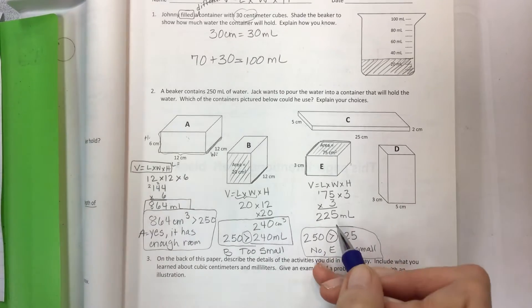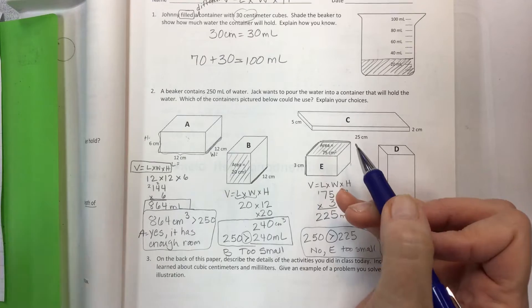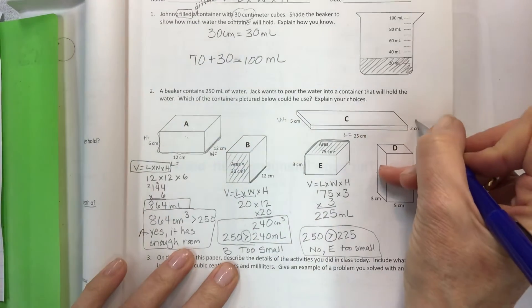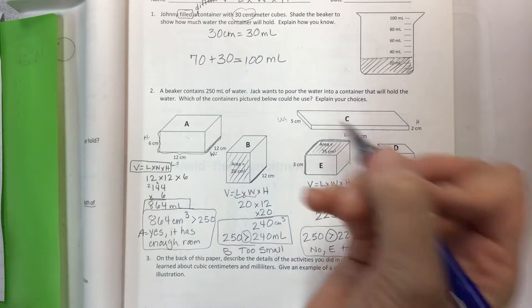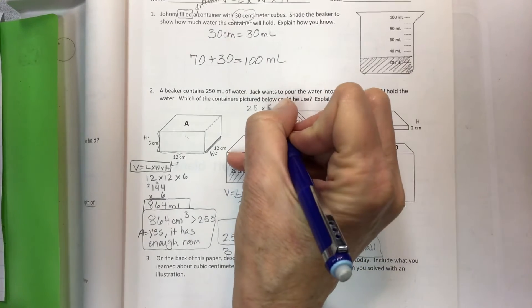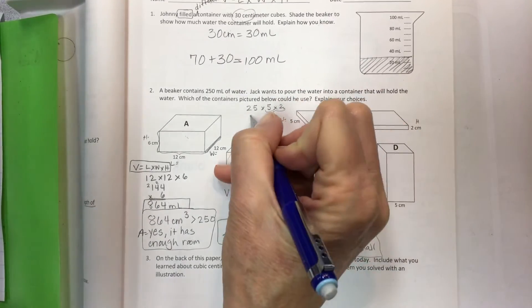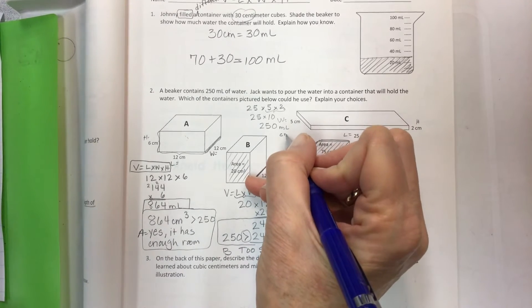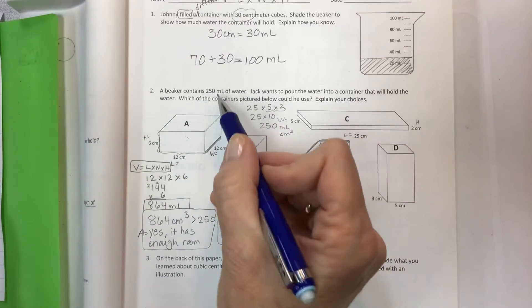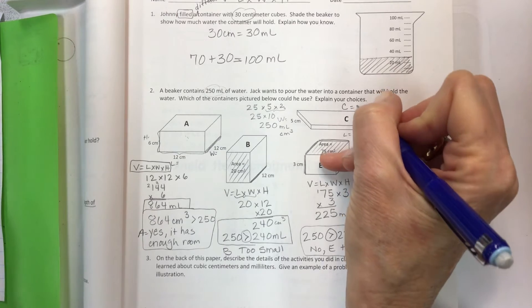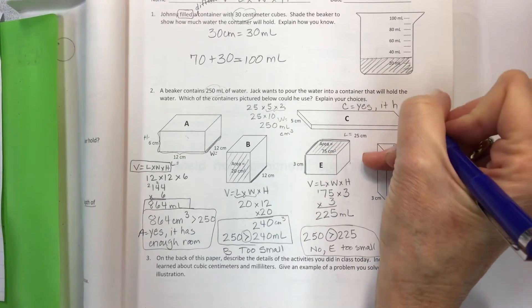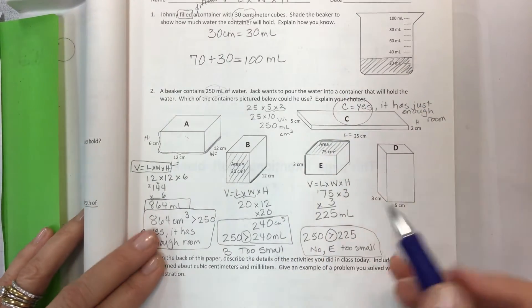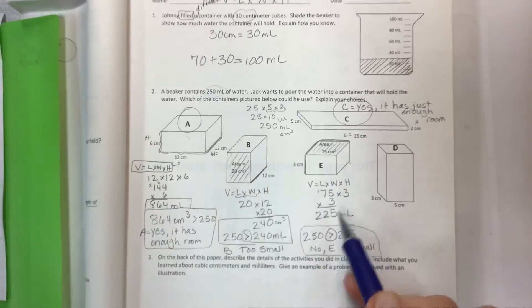C is up here so I've got my length width height. Set this up with your formula - 25 times 5 times 2 and I'd love to get a 10 because that makes my multiplication really easy. And so this one would be 250 milliliters or 250 centimeters cubed and 250 is exactly what we need. So C equals yes, it has just enough room. So we've got C for yes and A for yes and B and E are a no.